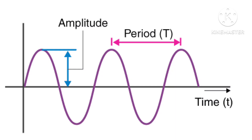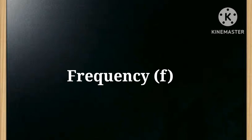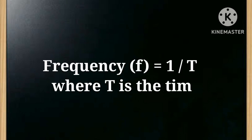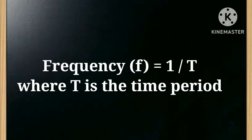Now let's understand what time period is. The time taken by a vibrating body for one complete vibration is known as the time period of vibration, denoted by T. Since one vibration is made in every T seconds, the number of vibrations made in one second is 1/T — which is the frequency f. So the expression is: frequency f = 1/T, where T is the time period. Therefore, time period and frequency are reciprocals of each other.